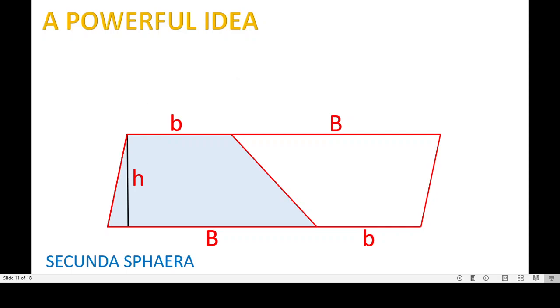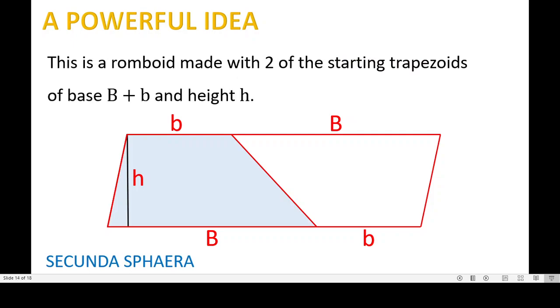So what we have now is a rhomboid made with two of the starting trapezoids and the sum of the bases and height h.